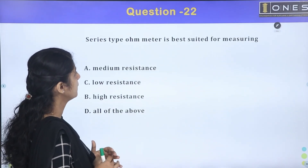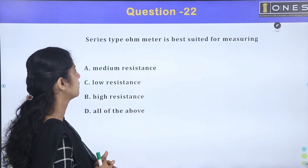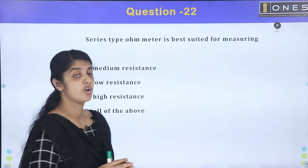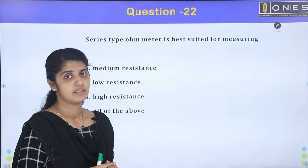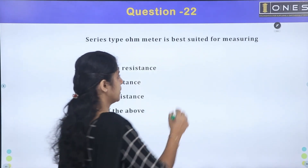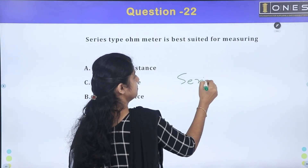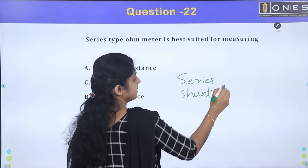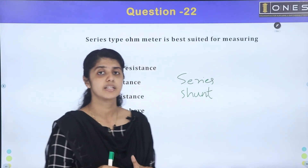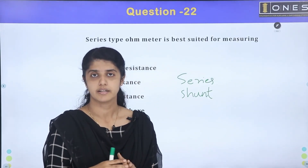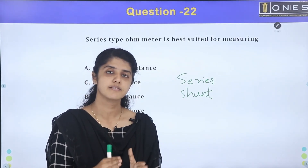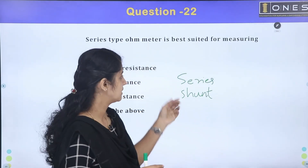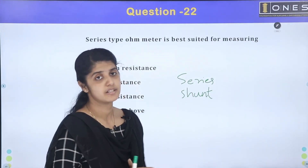Series-type ohmmeter is best suited for measuring what? There are two types of ohmmeter: series type and shunt type. The ohmmeter, also called a homes-meter, measures resistance.